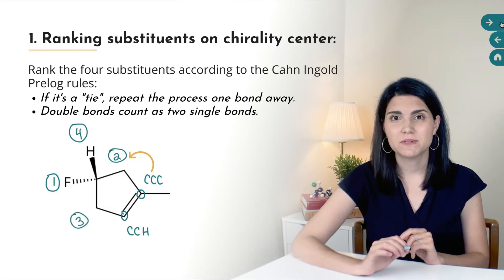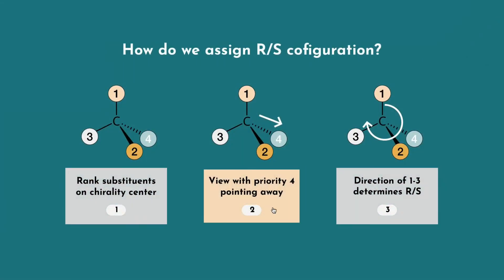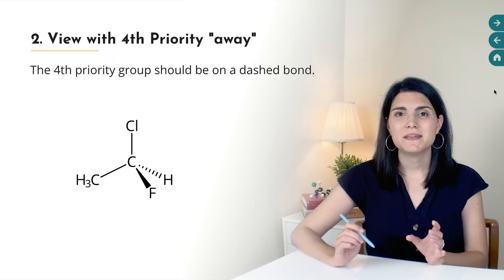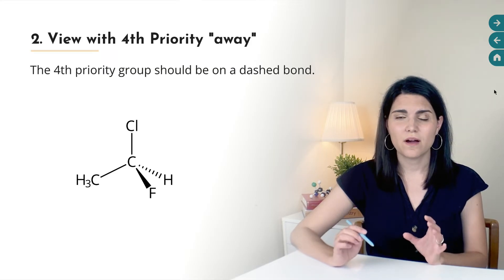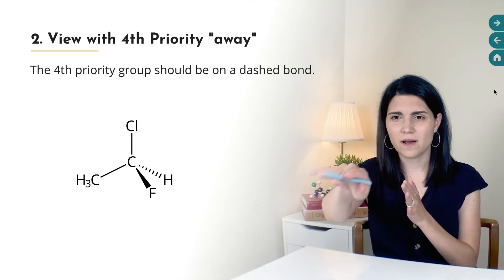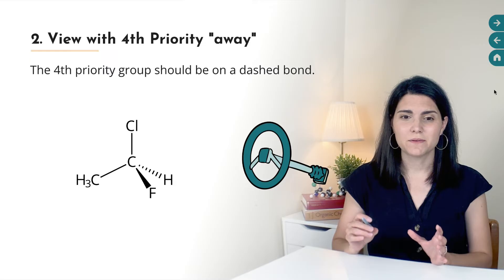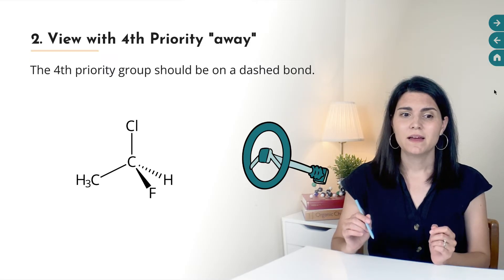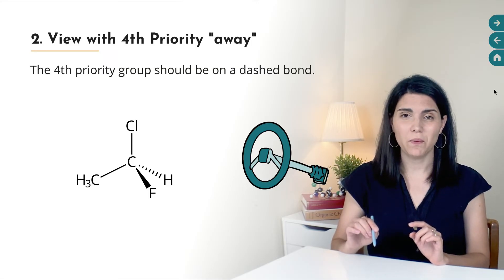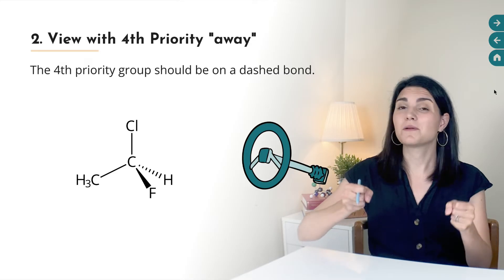Once you have all your substituents ranked from one to four, it's time for the second step: view the molecule with the fourth priority group — usually a hydrogen atom — pointing away from you. Usually this means the hydrogen is on a dashed bond, pointing away from you and into the page. We want to look at groups one, two, and three as if they make a steering wheel, with the bond to the fourth priority group like the steering column pointing away from us.